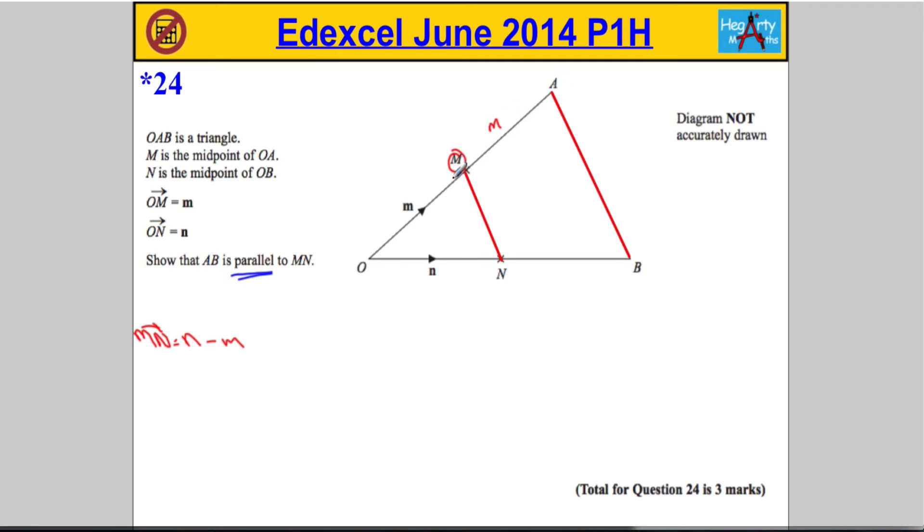To get from M to A, we must also travel the exact same distance in the exact same direction. So that's also going to be m. And similarly, if this is the midpoint here, and this from O to N is denoted by the letter little n, then from N to B must also be denoted by the letter n.